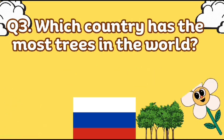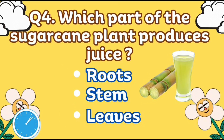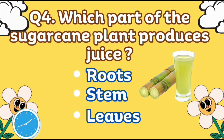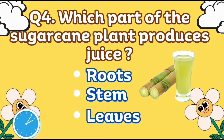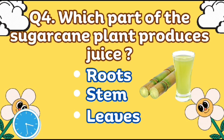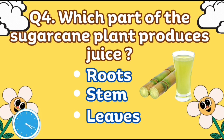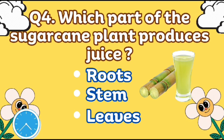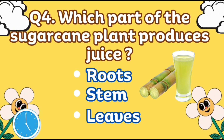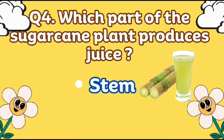Which part of the sugarcane plant produces juice? The right answer is the stem.